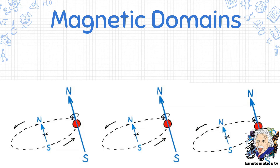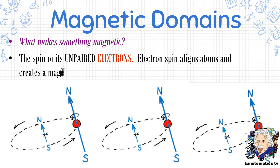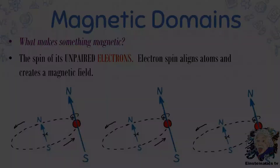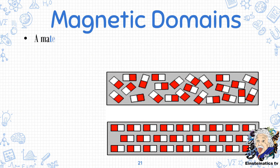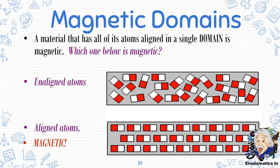Another question when pertaining to magnetic domains: what makes something magnetic, or where does a magnet's ability to attract another material come from? This ability comes from the spin of its unpaired electrons — electron spin aligns atoms and creates a magnetic field. The difference between a magnet and a non-magnetic material is that a magnet has all its atoms aligned in a single domain, and that makes it magnetic. The second picture is the one that is magnetic because all its atoms are aligned in a single domain.